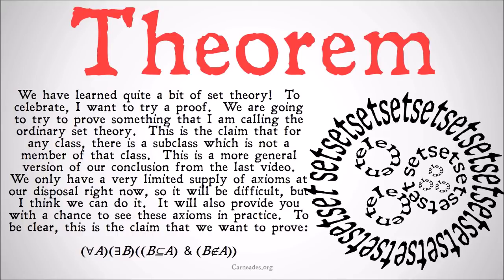We have learned quite a bit of set theory in the last couple of weeks. To celebrate, I want to try a proof. Now if you watched the original '100 Days of Logic,' you saw that when we do proofs we do very clear, line-by-line, formal proofs that clearly state the axiom or rule of replacement we're using to get from one line to the next. That's what we're going to do here. It helps to show really what's going on with the detailed mechanics of what each of these axioms and statements mean, and hopefully it helps you to see the implications of all the definitions that we're using.